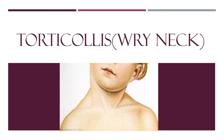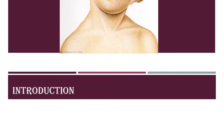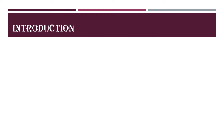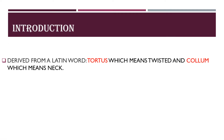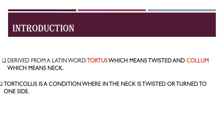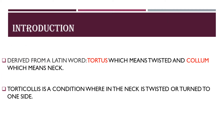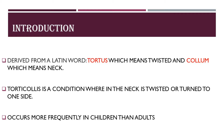Hello everyone. Today we will be discussing a topic called torticollis or wryneck. Coming to introduction, it is derived from Latin words 'tortis' meaning twisted and 'column' meaning neck, so the literal meaning is twisted neck. Torticollis is a condition wherein the neck is twisted or turned to one side. It occurs more frequently in children than adults.